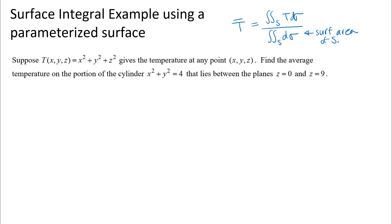I'm going to sketch a little picture of the surface. We talked in the last video about how you need to be careful about all these equations, that you're clear about which of these equations actually define the surface. Our surface here is this portion of this cylinder. Notice this is the same cylinder that showed up in our last video, but in that last video the surface was the portion of the plane that lies inside that cylinder. This time we're looking at the average temperature on the cylinder that lies between two planes — between z equals zero and z equals nine.